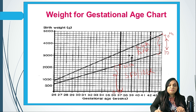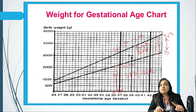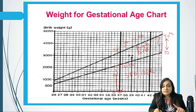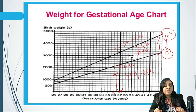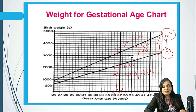If the weight is beyond the 90th centile — for example at 37 weeks if the baby's weight is more than 3200 grams as per this chart — then it is large for date. The centile used here is the 10th and 90th centile, not the 3rd or 97th. This is frequently asked in MCQs, so please pay attention: between the 10th and 90th centile is called appropriate for gestational age.